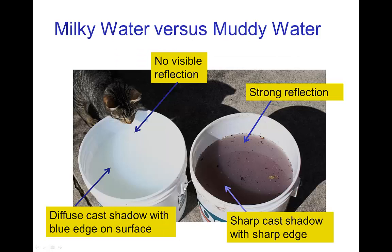We can compare this with milky water as opposed to murky muddy water. With milky water, we have a more diffuse cast shadow because of subsurface scattering — it even has something of a blue edge. As with the clear water, there's not much reflection; you don't see a reflection of my cat's face in the water. With the muddy water, we again see a strong cast shadow with a sharp edge and a strong reflection of the sides of the bucket.